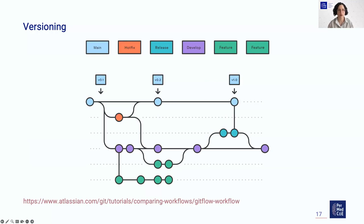A typical Git workflow has a main branch with only published releases and their specific versions. The development branch is where you usually work. When adding a feature, you create a feature branch, develop the feature, and merge it back to development — or leave it if you decide not to include it. For bugs, you do a hotfix branch and bring changes back to the main branch with a new version and also to your development branch. When you are ready to release, you create a release branch to update release notes, change the version, and perform other checks before releasing a new version.